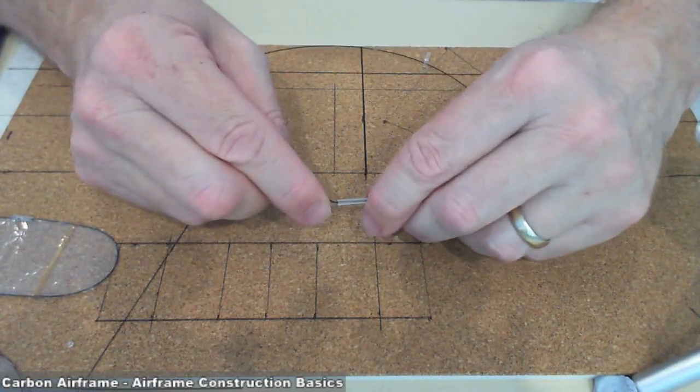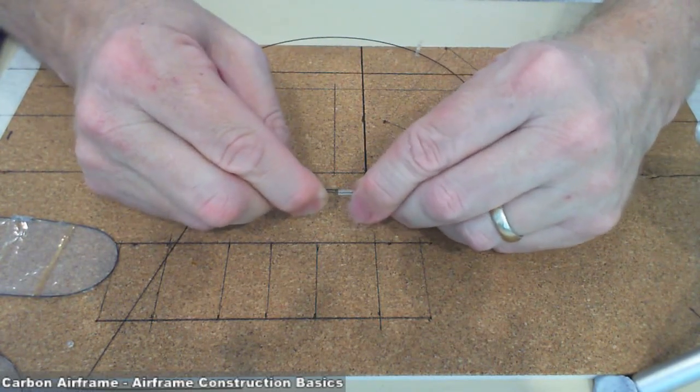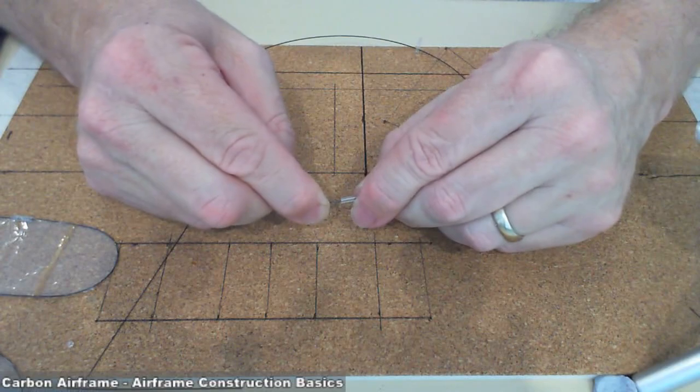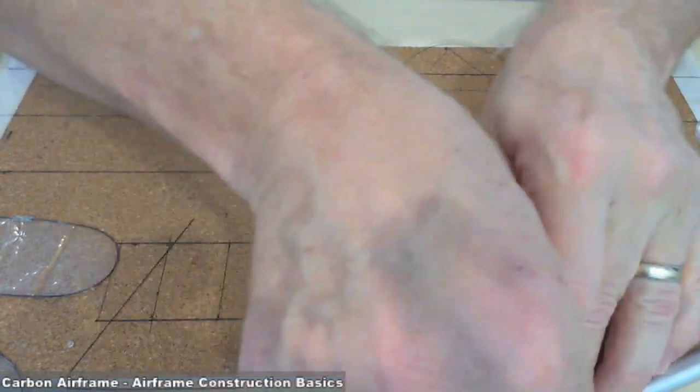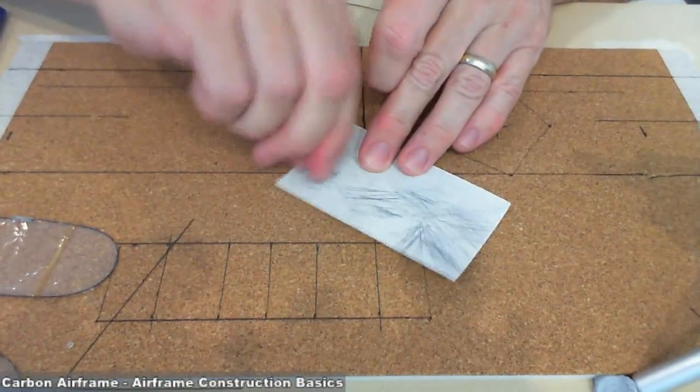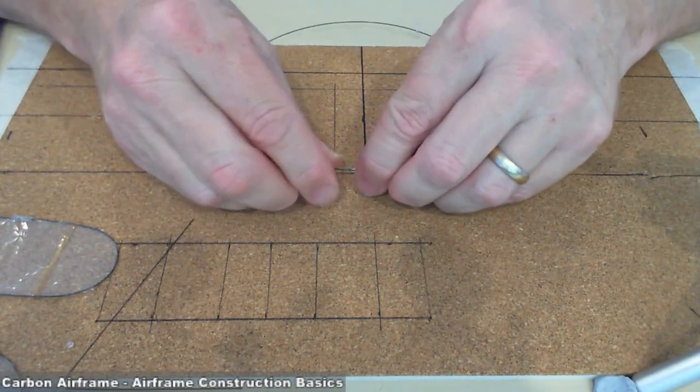So we're going to put both of the carbon ends, carbon rod ends into there. Okay, this is the bit that takes a little bit of time. And you might want to sharpen up the end a little bit. There we go.